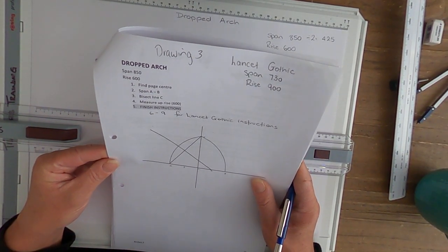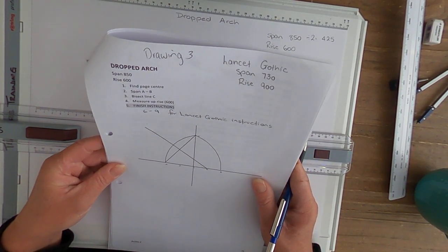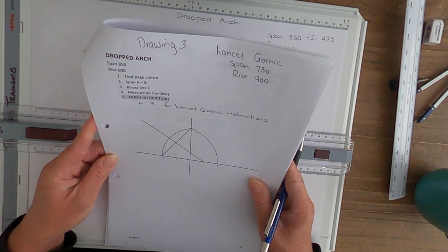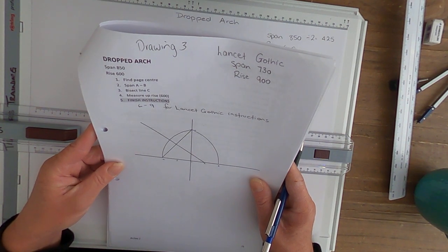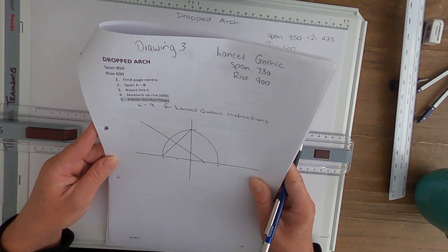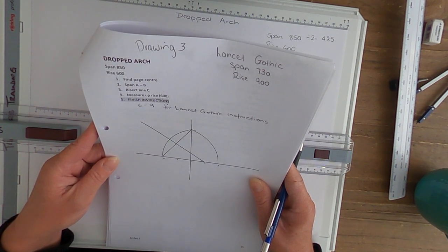Drawing 3 is the Dropped Arch. We've just completed the Lancet Gothic Arch and it's very similar to how we draw the Dropped Arch. The only difference is the span of the Dropped Arch is 850 so it's wider, and the rise is 600 rather than the Lancet Gothic.